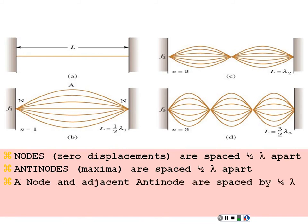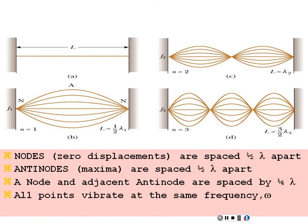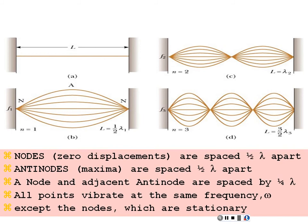A node and an adjacent antinode are spaced a quarter-wavelength apart. All points of the string vibrate with angular frequency ω according to cos(ωt), except for the nodes, which appear stationary — though if you looked closely, the string is still vibrating very quickly even with no amplitude at those points.